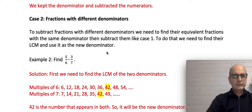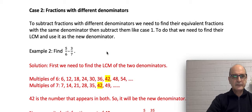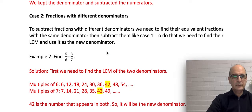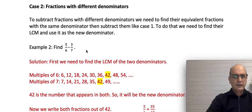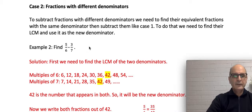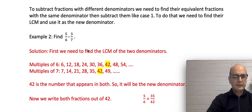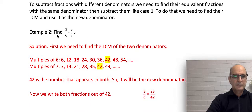Case two is when we have different denominators. If the denominators are different, there are multiple steps we need to take. Because the denominators are different, we need to make them the same. That new denominator will be the lowest common multiple of the denominators, and then we write each fraction as an equivalent fraction with that new denominator.